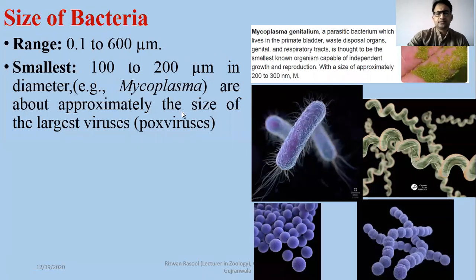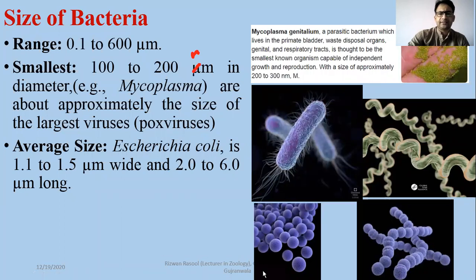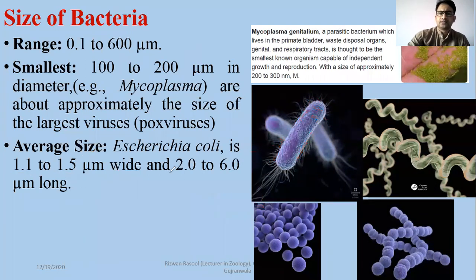The average bacterial size is 1.1 to 1.5 micrometers in width and 2 to 6 micrometers in length. Looking at E. coli bacteria: their length is 2 to 6 micrometers and their width is 1.1 to 1.5 micrometers.